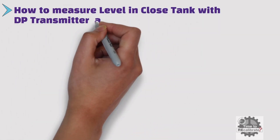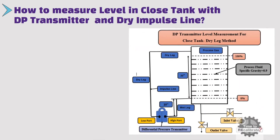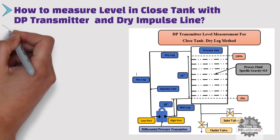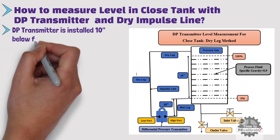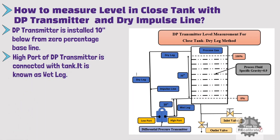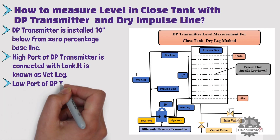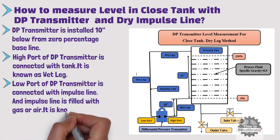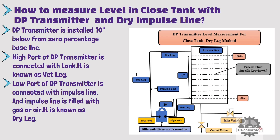Now, how to measure level in a closed tank with a differential pressure transmitter and dry impulse line. This method of liquid measurement is also known as the dry leg method. As you can see from the picture, the differential pressure transmitter is installed 10 inches below from the 0% baseline. The high port side of the DP transmitter is connected with the tank, and the process fluid puts pressure on the high side — this is also known as the wet leg. The low port side is connected with an impulse line filled with gas or air, which does not put any pressure on the low port side. The height of the dry impulse line does not affect level measurement, so the low port side has 0 inch H2O pressure.